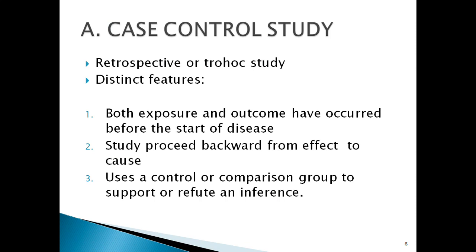The first type is the case-control study. It is also known as a retrospective study because it goes backwards — the cases and controls are already present at the beginning of the study. Data is collected by asking questions, using questionnaires, or reviewing previous hospital records. It is also known as a 'trohoc' study, which you can see as the reverse of 'cohort.' So cohort is always a prospective study, and the opposite — trohoc — refers to case-control study.